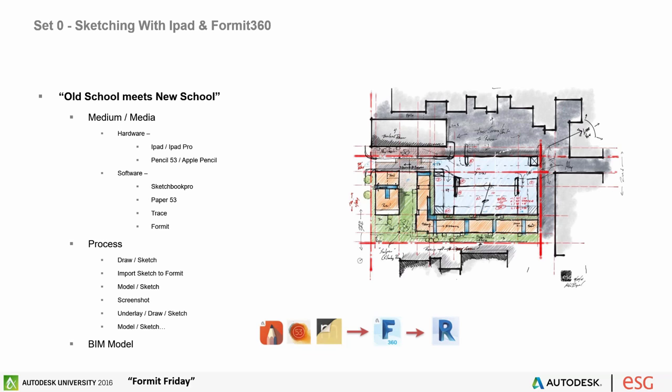Getting into examples of what this actually looks like in a workflow — the first set Mike calls 'old school meets new school.' There's no paper involved but it's visually looking like a sketch. Very often this is how Mike starts projects: typically beginning with Google Earth on the iPad, taking the image and starting to sketch over it, the same way you might print a survey and put a piece of trace paper over it. The majority of the time this is done on an iPad, and it can be done anywhere, at any time.